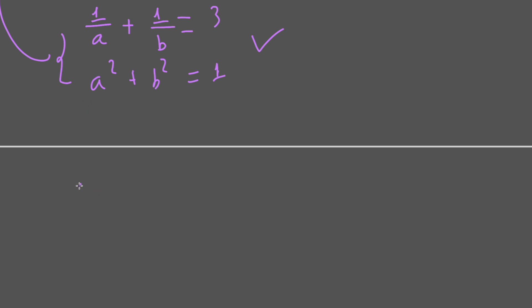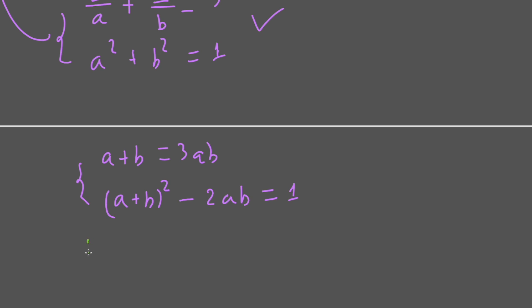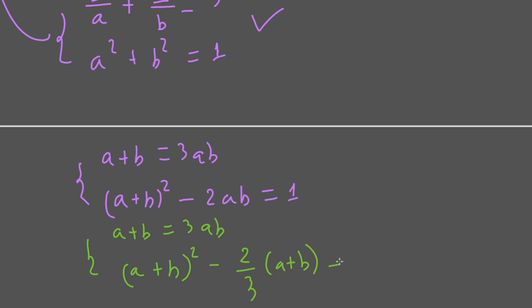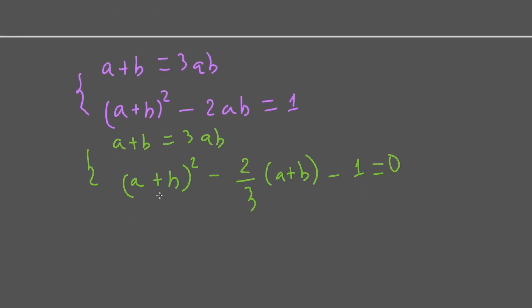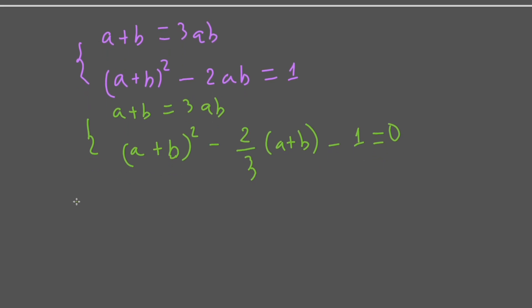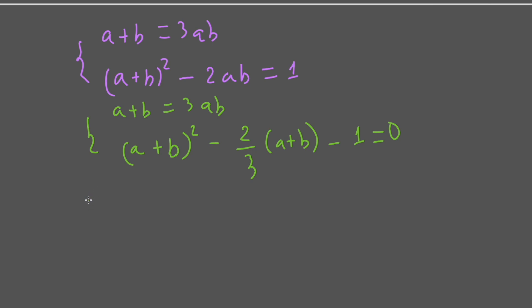From the system equation we have a plus b equal to 3ab, and a squared plus b squared equals 1, which means (a plus b) squared minus 2ab equals 1. Replacing the first into the second, we get 2 over 3ab minus 1 equal to 0. This is a quadratic equation, and using the quadratic formula we get a plus b equal to (1 plus square root of 10) over 3.